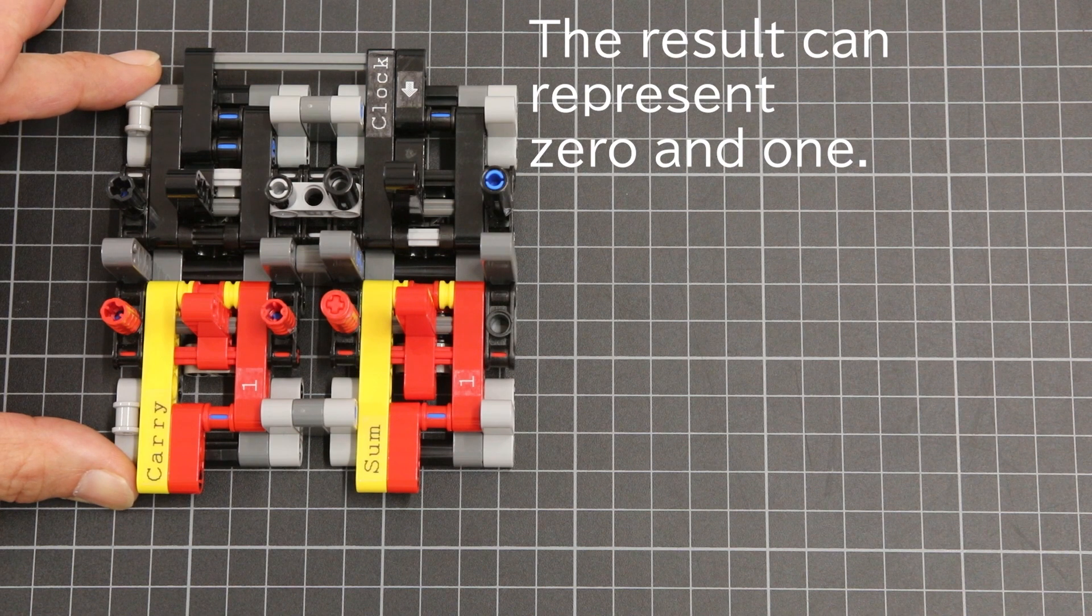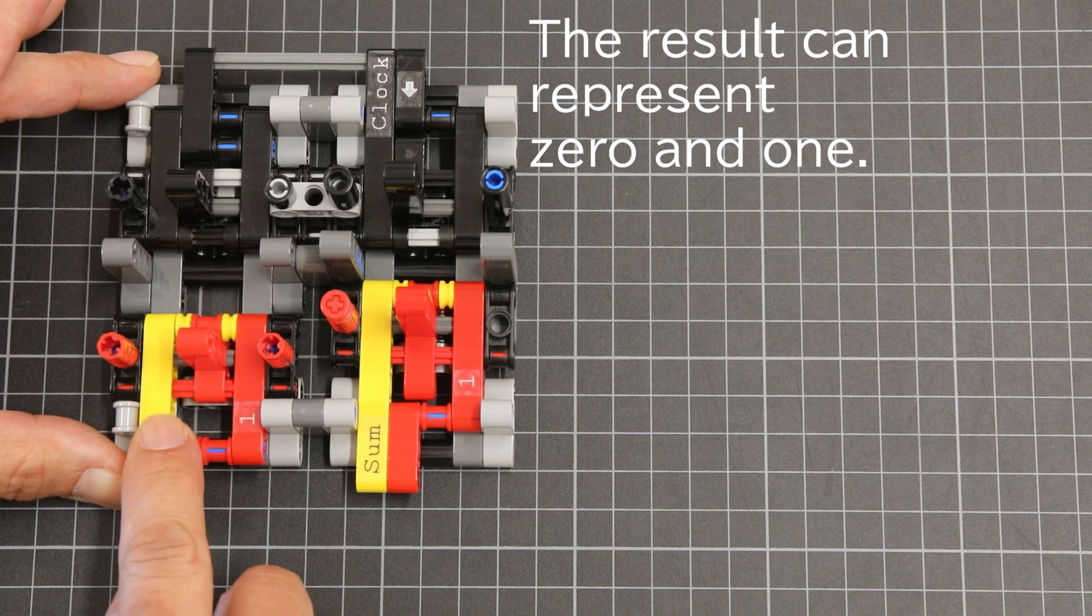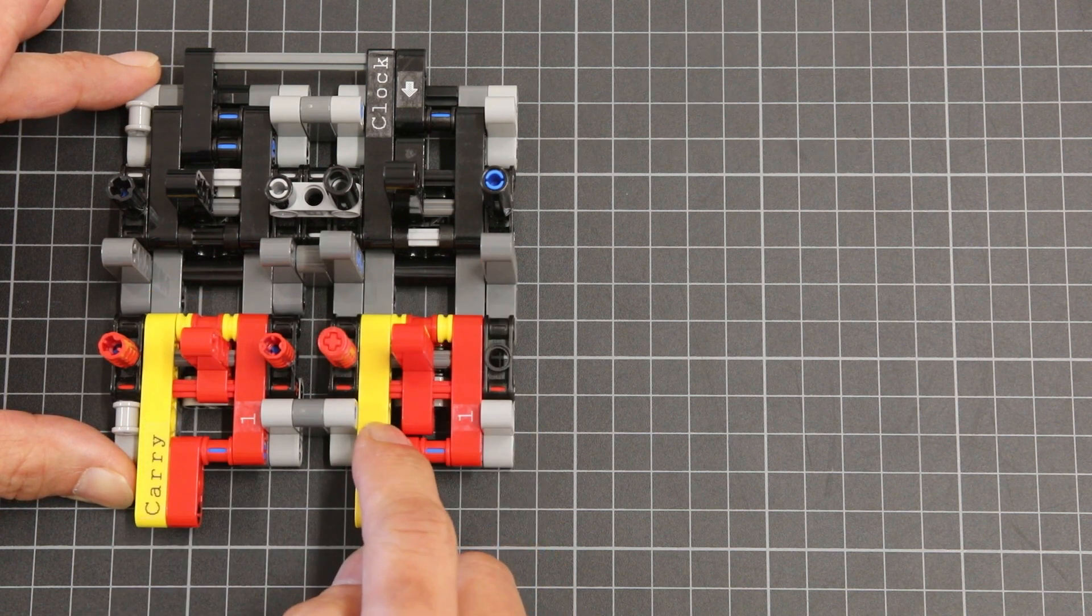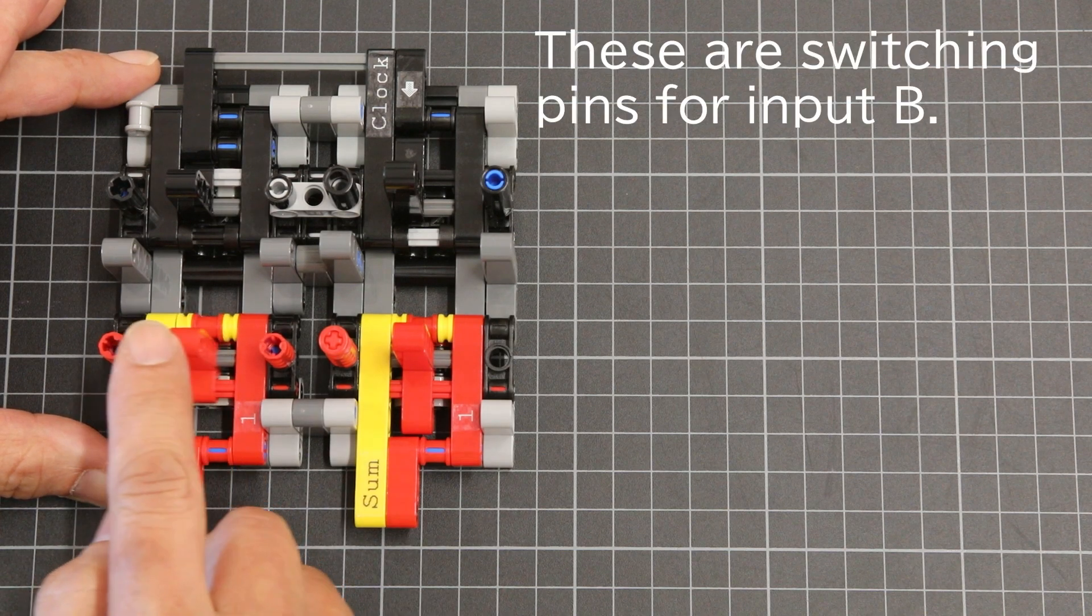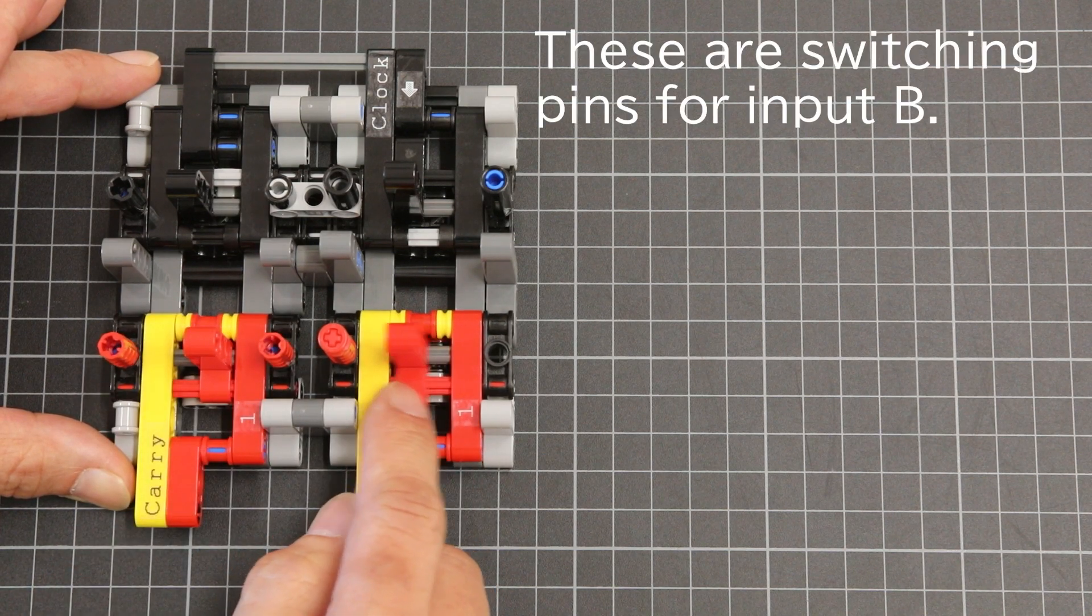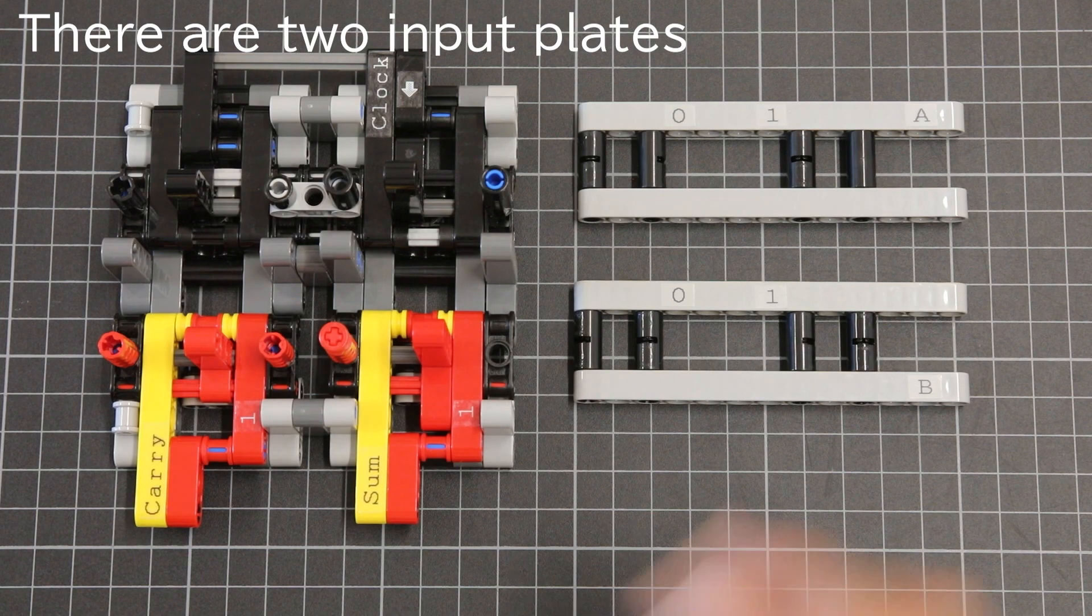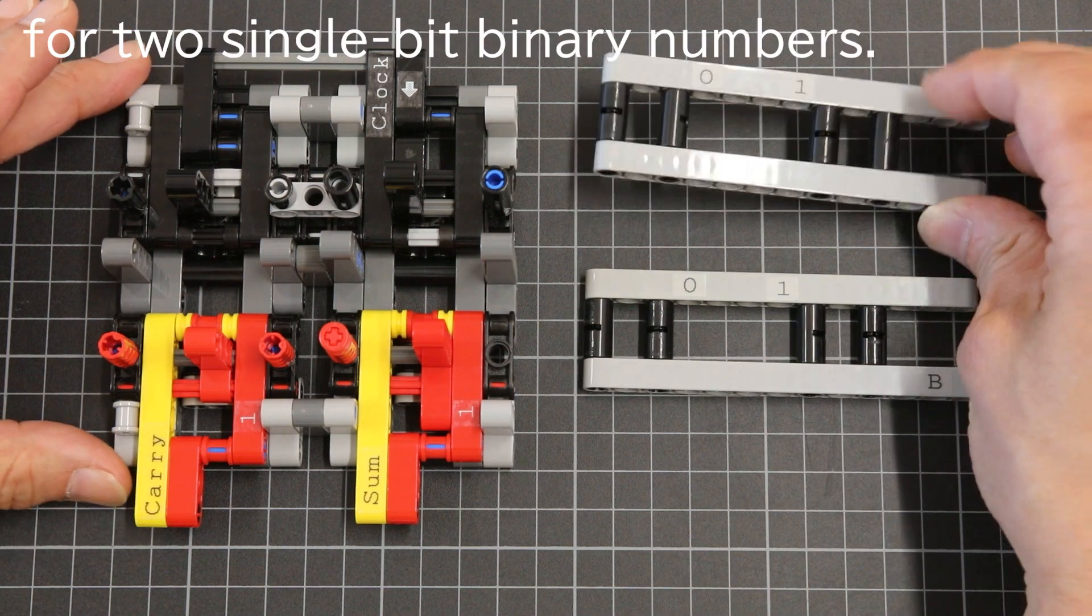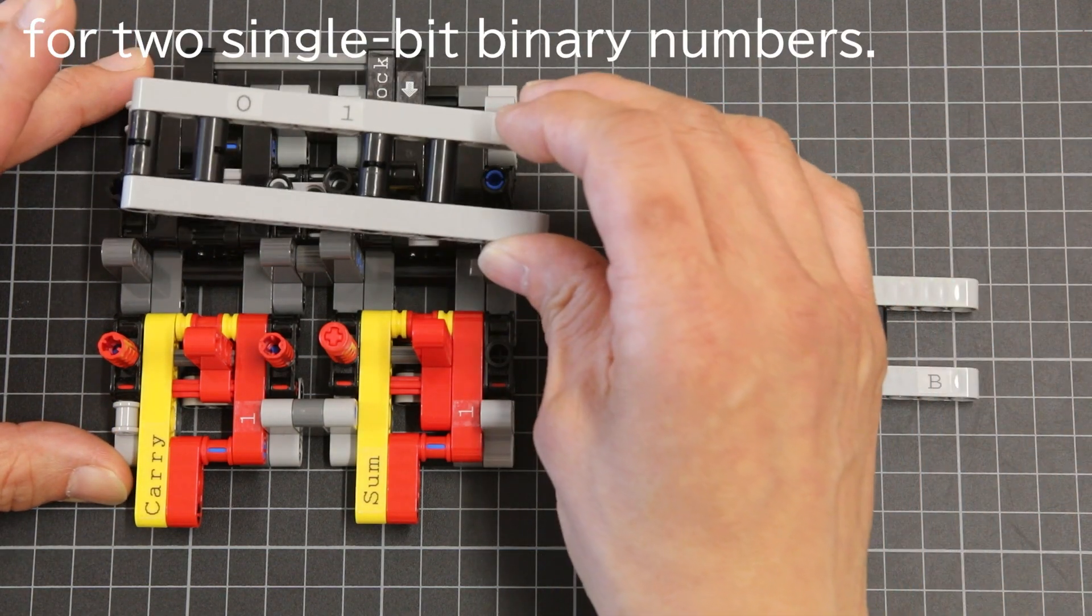The result can represent 0 and 1. These are switching pins for input B. There are two input plates for two single-bit binary numbers.